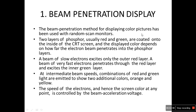The beam penetration method for displaying color pictures has been used with random scan monitors. Two layers of phosphor, usually red and green, are coated onto the inside of the CRT screen. The displayed color depends on how far the electron beam penetrates into the phosphor layer. A beam of slow electrons excites only the outer red layer.